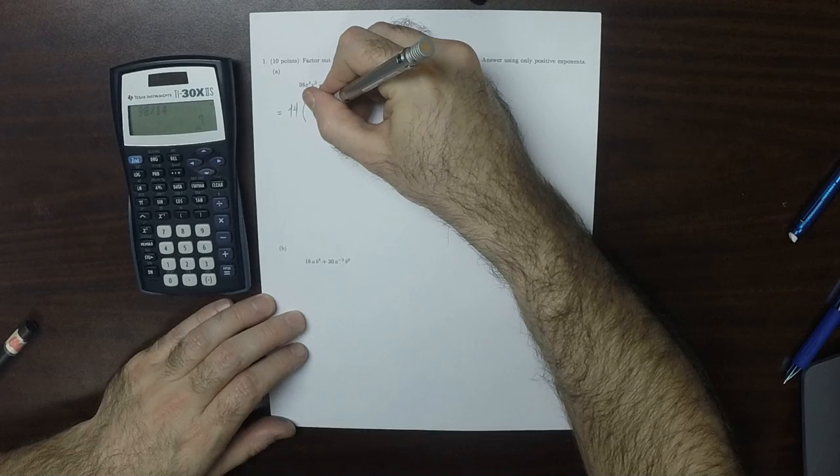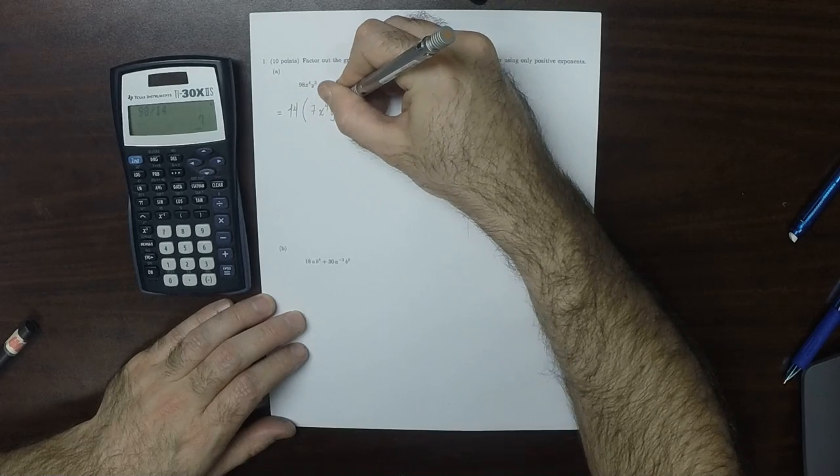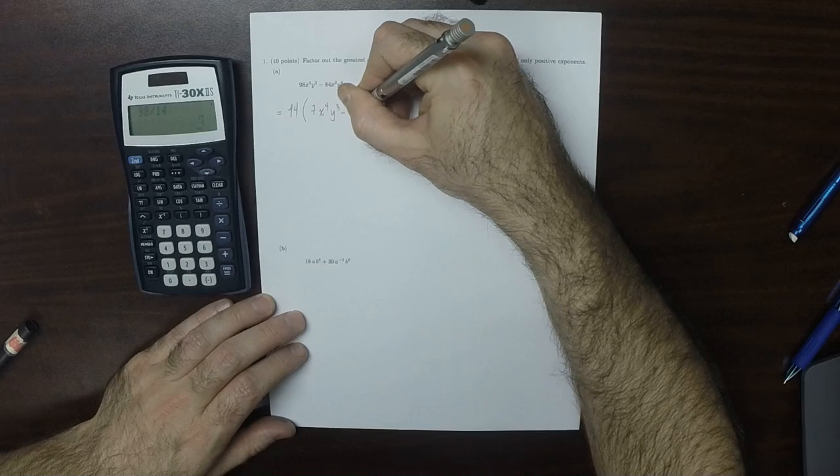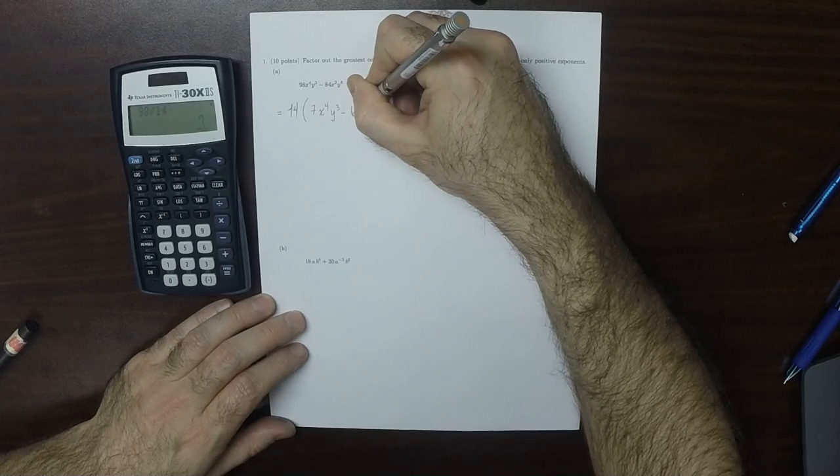That would be 7x to the 4, y to the 3, minus 6x to the 2, y to the 4.